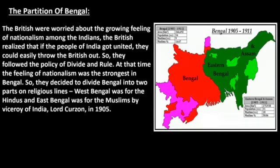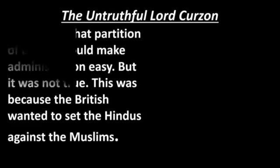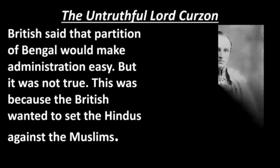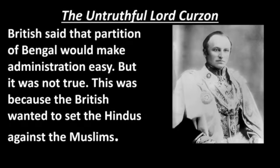So they decided to divide Bengal into two parts on religious lines — West Bengal was for the Hindus and East Bengal was for the Muslims, carried out by the Viceroy of India, Lord Curzon, in 1905. The British said the partition of Bengal would make administration easy, but that was not true. In reality, the British wanted to set the Hindus against the Muslims.